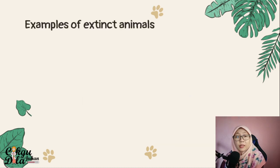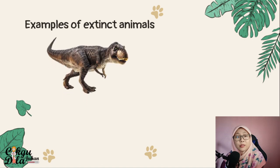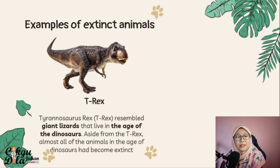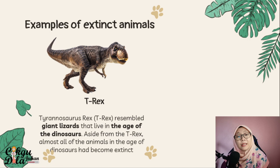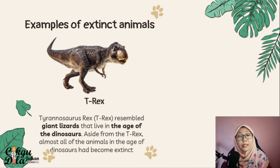We have another example of extinct animals — the T-rex, or Tyrannosaurus Rex. It resembles a giant lizard that lived in the age of the dinosaurs. Aside from the T-rex, almost all the animals in the age of dinosaurs had become extinct.